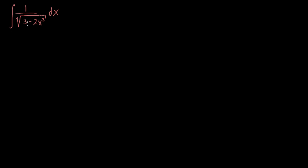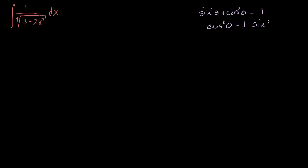What I can do is I could say this almost looks like some trig identities that I'm familiar with, so maybe I can substitute with trig functions. Let's see if I can find a trig identity that looks similar to this. Our most basic trigonometric identity, which comes from the unit circle definition, is that sine squared of theta plus cosine squared of theta is equal to 1. If we subtract sine squared of theta from both sides, we get cosine squared of theta is equal to 1 minus sine squared of theta.